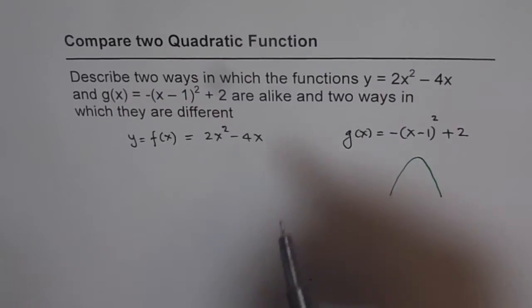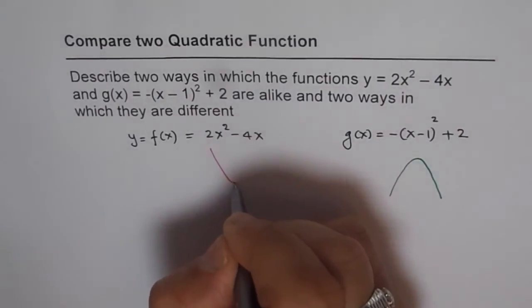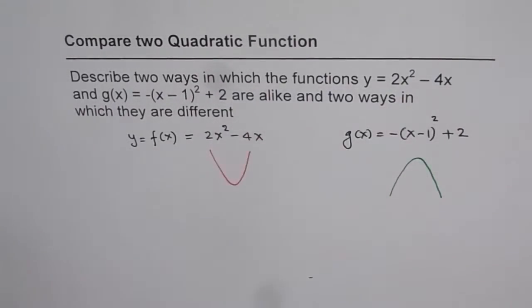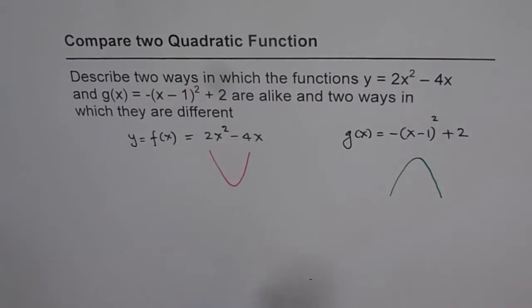But this parabola on the left side, on the other hand, is opening upwards since the coefficient is positive. So you can see these parabolas as such.